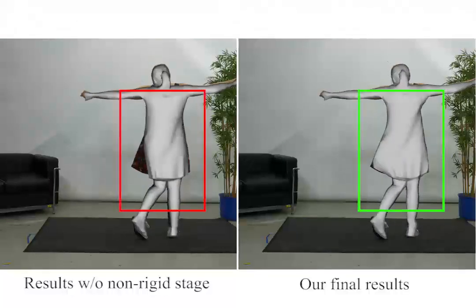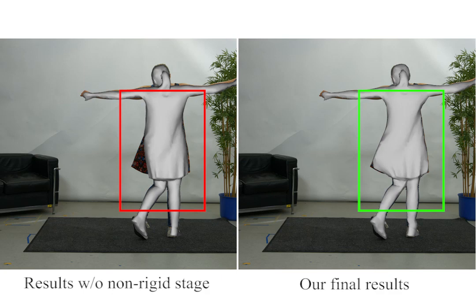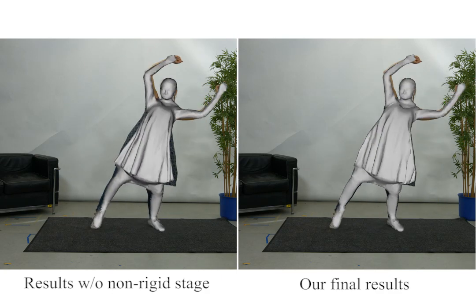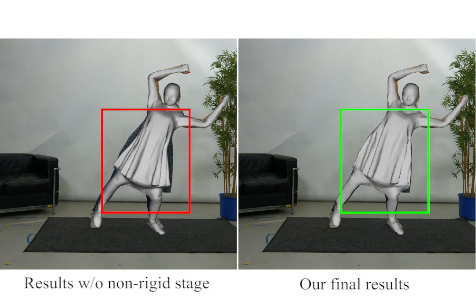Now we show more results. Note that the non-rigid deformation of the loose clothes, which cannot be modeled by the skeleton tracking alone, is accurately captured by our full pipeline.